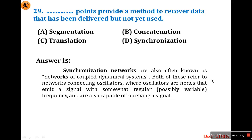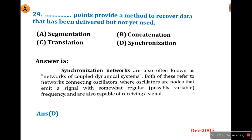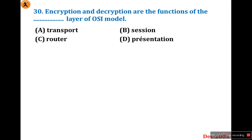Synchronization points provide a method to recover data that has been delivered but not yet used. The answer for question 29 in December 2005 is D. Question 30: Encryption and decryption are the functions of which layer of the OSI model? This question has been asked three to four times in previous papers and in other exams — it is a very important question.